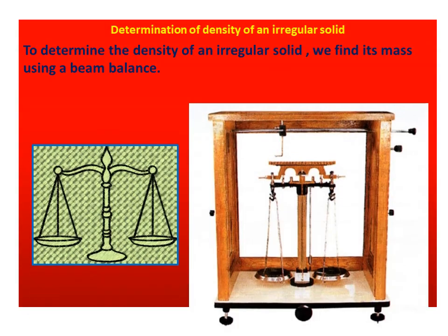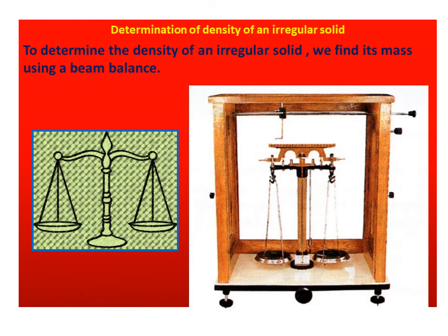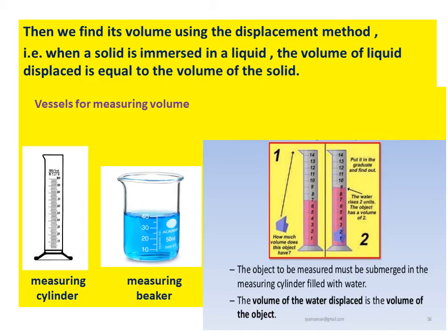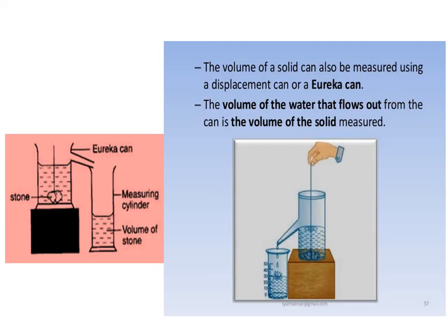Determination of density of an irregular solid. To determine the density of an irregular solid, we find its mass using a beam balance. Then we find its volume using the displacement method — that is, when a solid is immersed in a liquid, the volume of liquid displaced is equal to the volume of the solid. The volume of a solid can also be measured using a displacement can or a Eureka can. The volume of the water that flows out from the can is the volume of the solid measured.